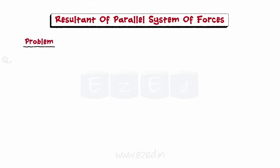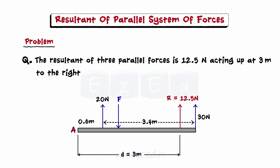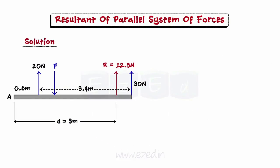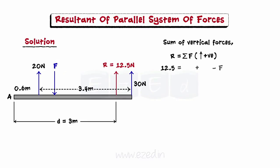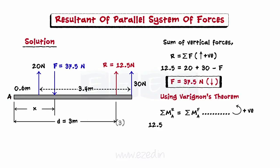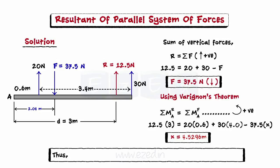Now, let's take a look at the following problem. The resultant of three parallel forces is 12.5 newton acting at 3 meters to the right of point A. Compute the magnitude and position of the missing force. In this parallel system of forces, we know the magnitude and position of the resultant, and we have to find the unknown force. We can find its magnitude directly by finding the summation of all the forces in the vertical direction. In order to find its exact location, we need to use Varignon's theorem about point A. On substituting the values and simplifying, we find x is equal to 37.5 newton acting vertically downwards at a distance to the right of point A.